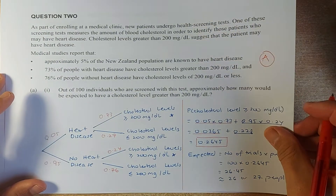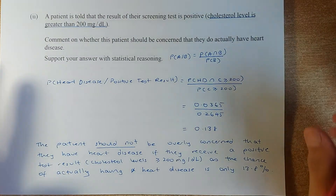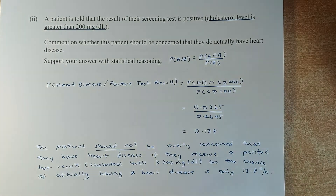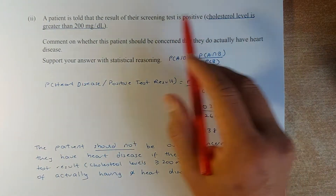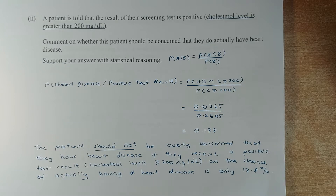We shall now continue with question 2. A patient is told that the screening test is positive. The most important is cholesterol level — if it's positive, then the cholesterol level is greater than 200 mg. Comment on whether this patient should be concerned that they do actually have heart disease, and support your answers with statistical reasoning. This is a conditional probability question.